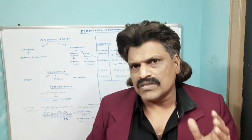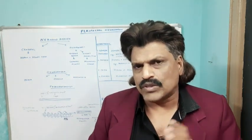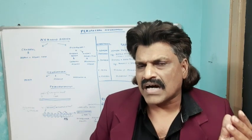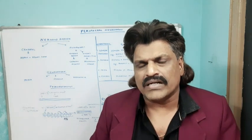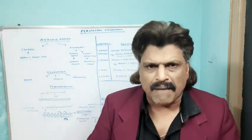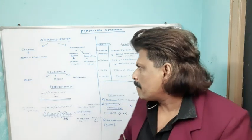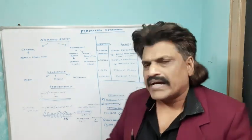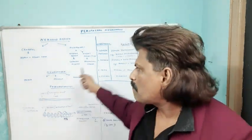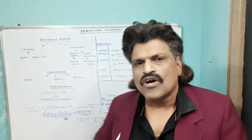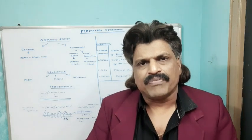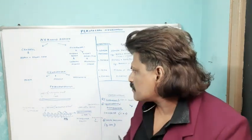The cranial nerves are from 3 to 12. The first and second cranial nerves are excluded because they are the continuation of the brain — they are part of the brain. So cranial nerves 3 to 12 and the peripheral nerves form part of the peripheral nervous system.